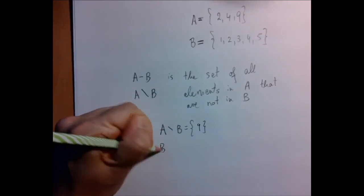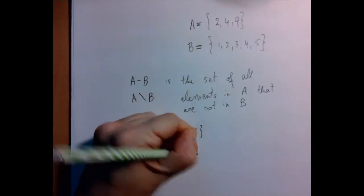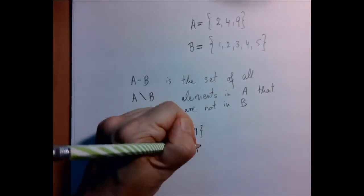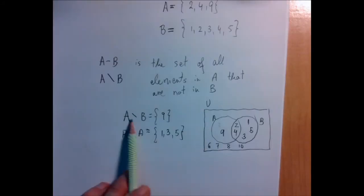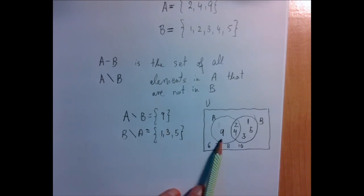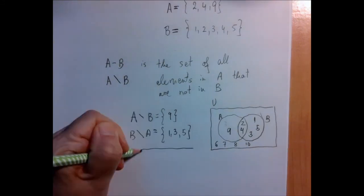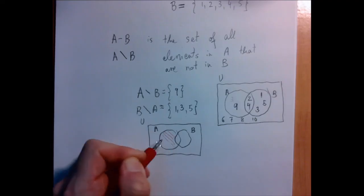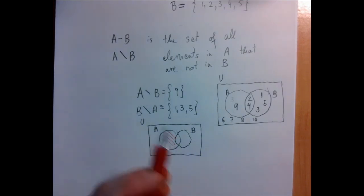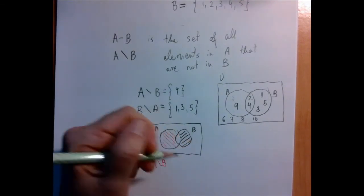And then B minus A would be all the elements in B that are not in A. So one is not in A, two is in A, three is not, four is in A, and five isn't. If we draw a Venn diagram: A minus B is the one-element set containing only nine, and B minus A is the three-element set containing one, three, and five. On a regular Venn diagram, A minus B is the part in A but not in B — shown in red — and B minus A is the other shaded part.